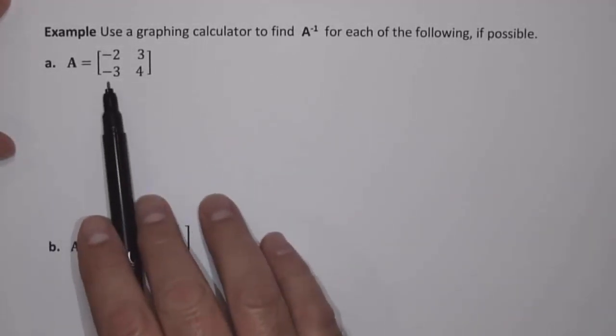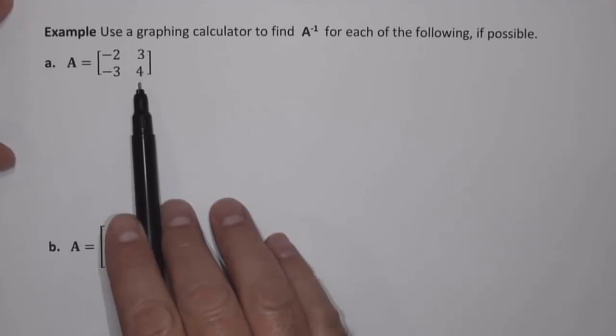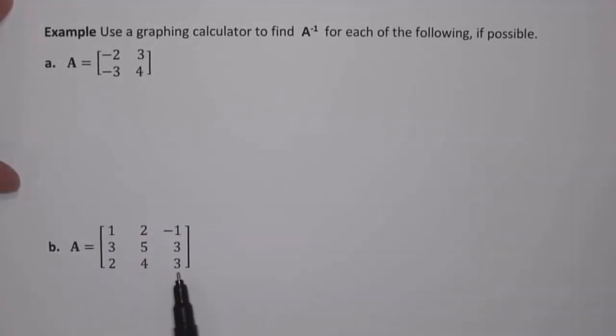So in Part A, we have a 2x2 matrix that we want to find the inverse of, and in Part B, we have a 3x3 matrix that we want to find the inverse of.